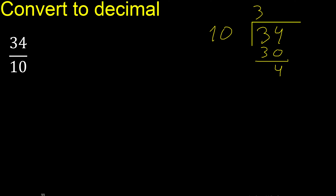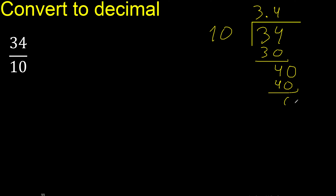Therefore, complete with a decimal point and bring down a 0. Now, 10 multiplied by which number is nearest to 40? 10 multiplied by 4 is exactly 40. Subtract: 40 minus 40 equals 0. Therefore, finish.